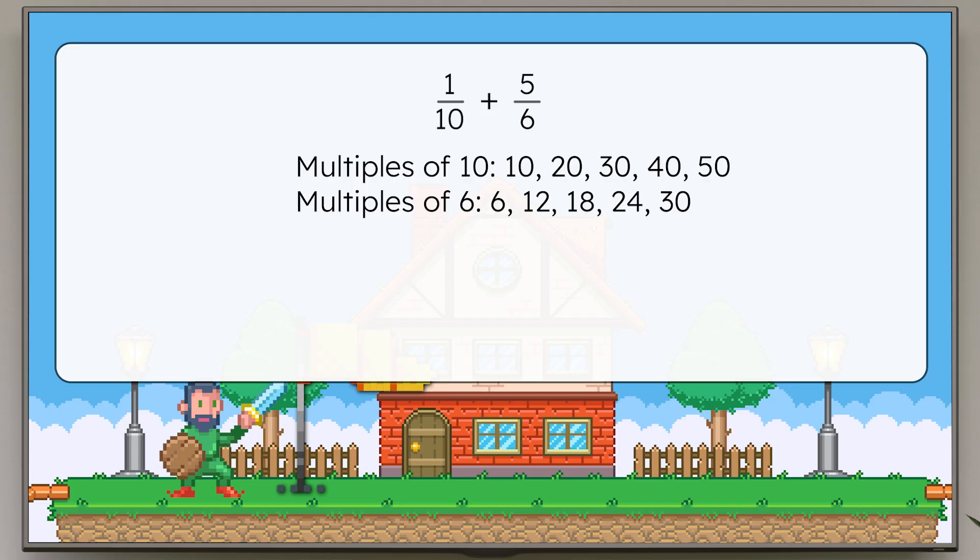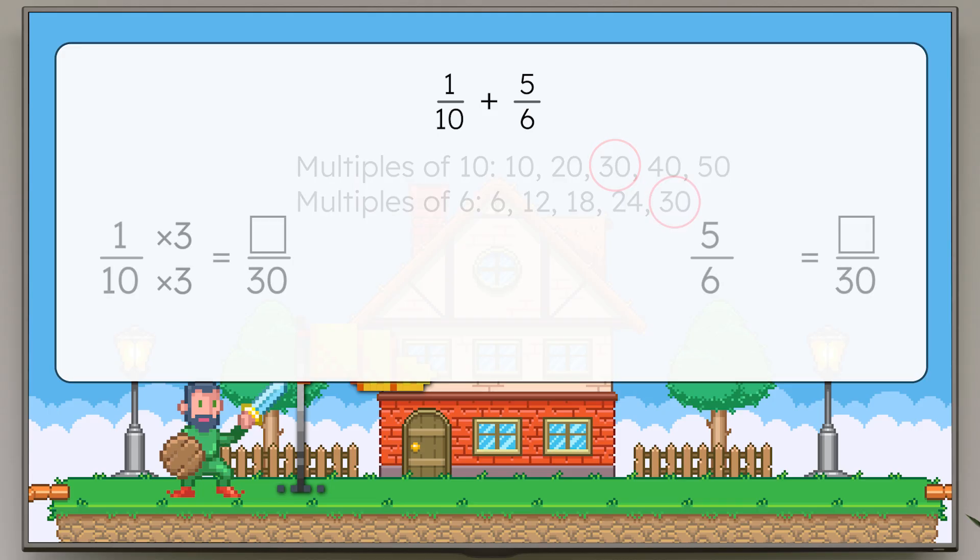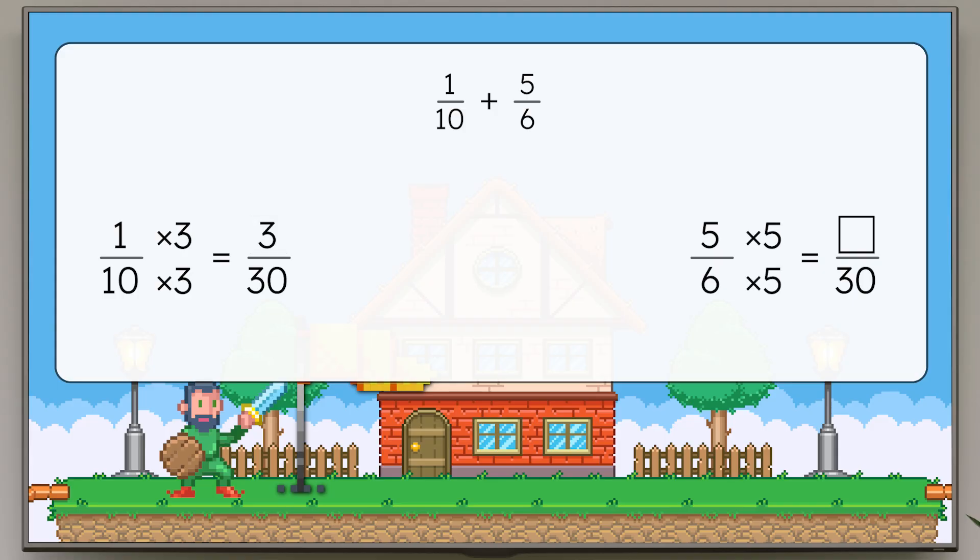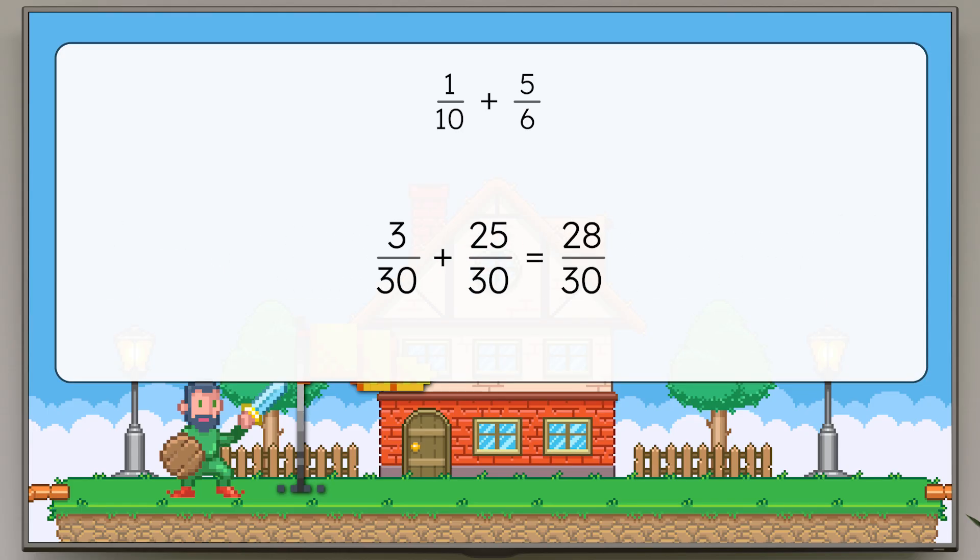Ten and six both have thirty as a common multiple. Since ten times three equals thirty, one-tenth is equivalent to three-thirtieths. Six times five equals thirty, so five-sixths is equivalent to twenty-five-thirtieths. Three-thirtieths plus twenty-five-thirtieths equals twenty-eight-thirtieths. Can we simplify that?